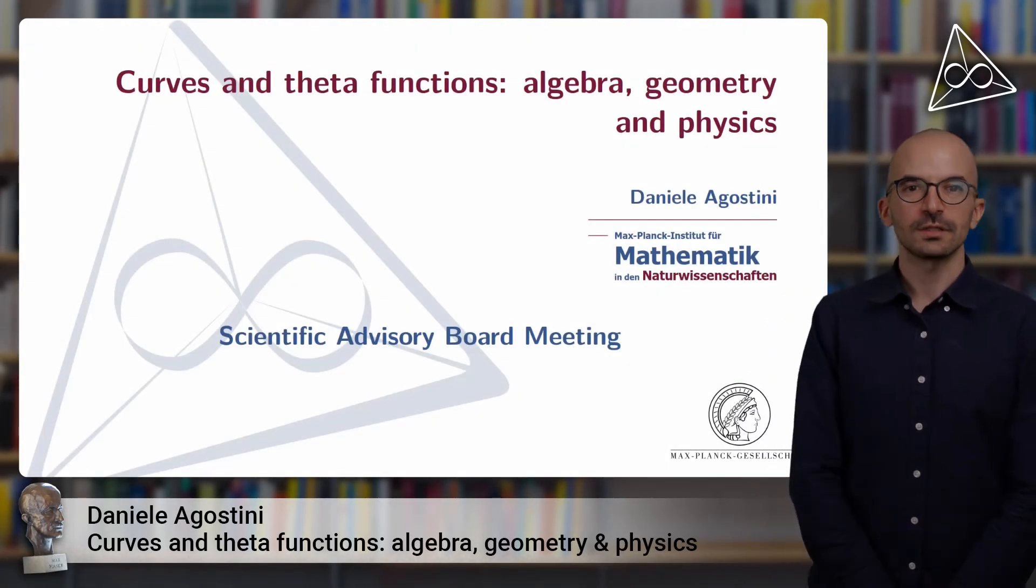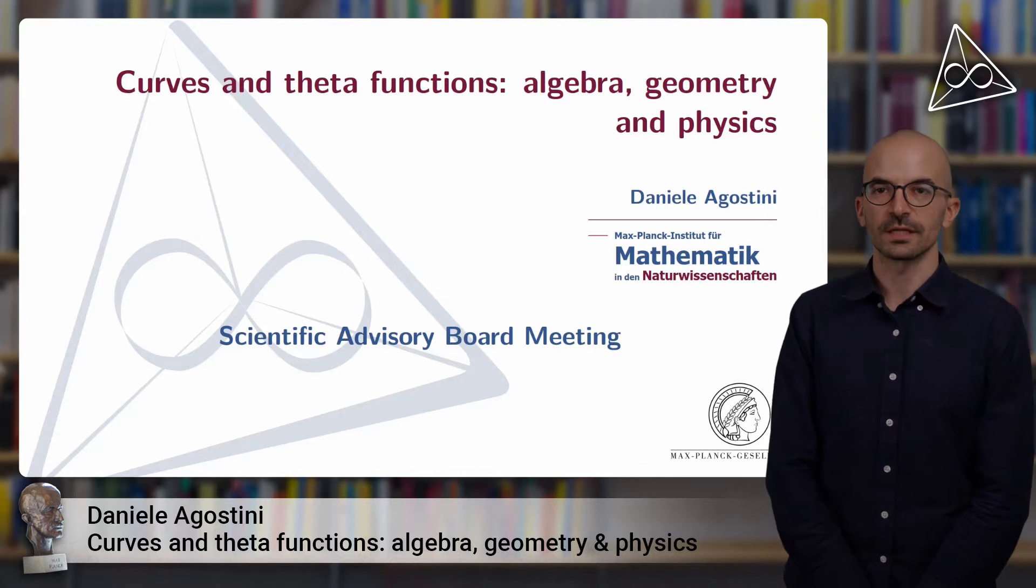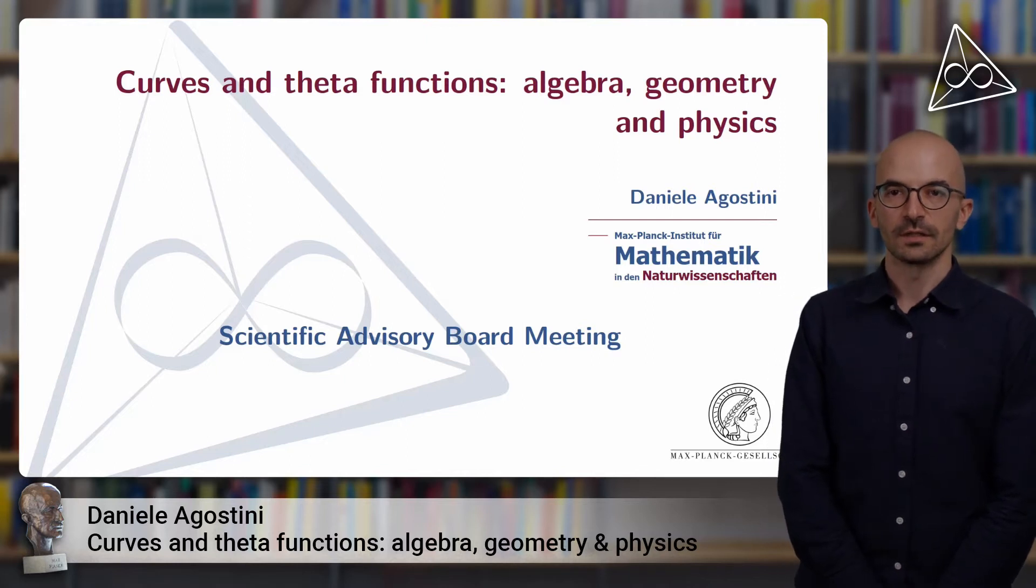Welcome! My name is Daniele Agostini and I am a research group leader since October 2020 in the Max Planck Institute for Mathematics in the Sciences in Leipzig.